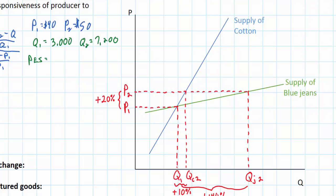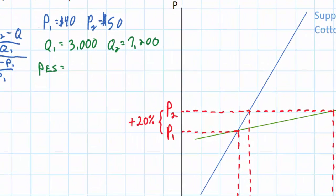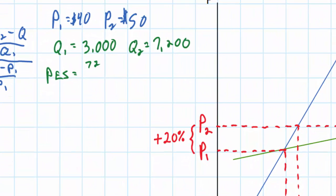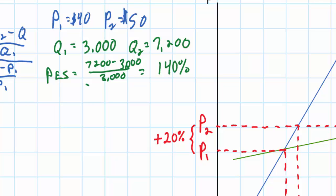Let's first calculate the percent change in quantity. We take Q2 — that's 7,200 — subtract Q1 — that's 3,000 — and divide by 3,000. This gives us an increase in the quantity supplied of blue jeans of 140%. And we can divide that by the percent change in price.